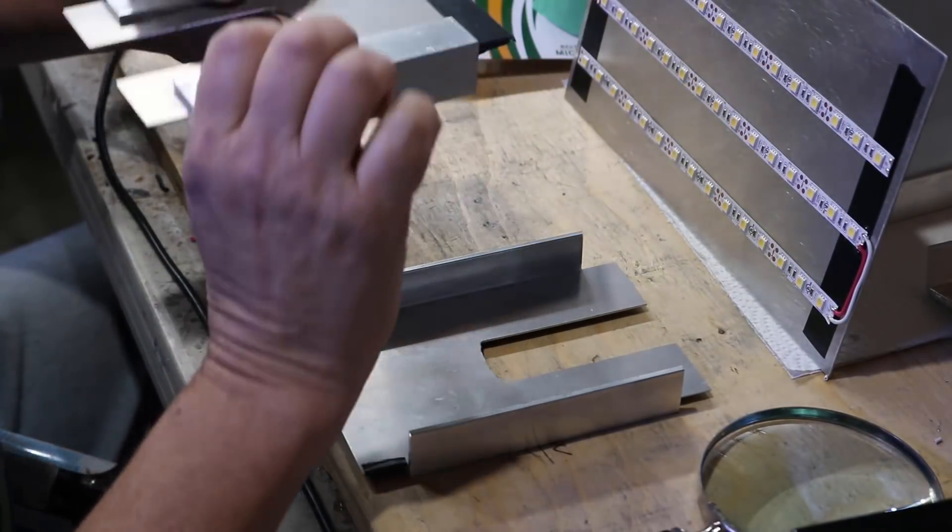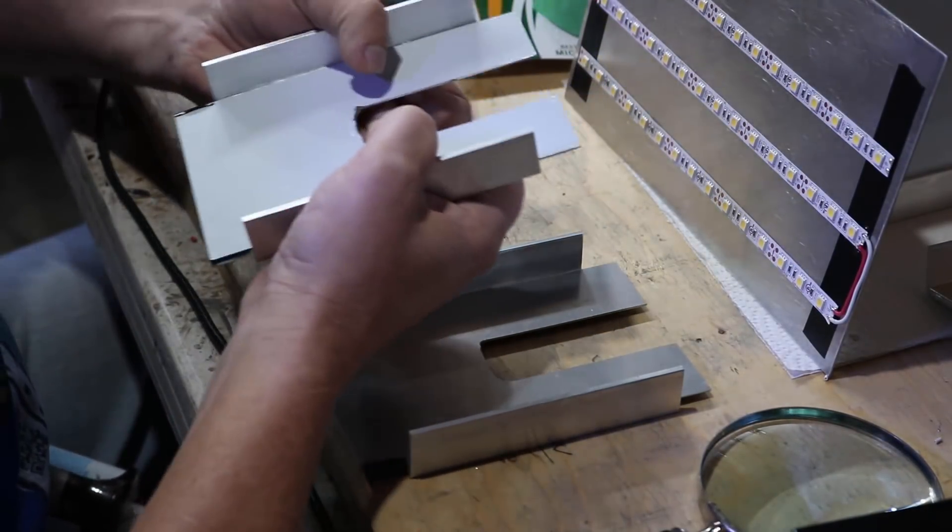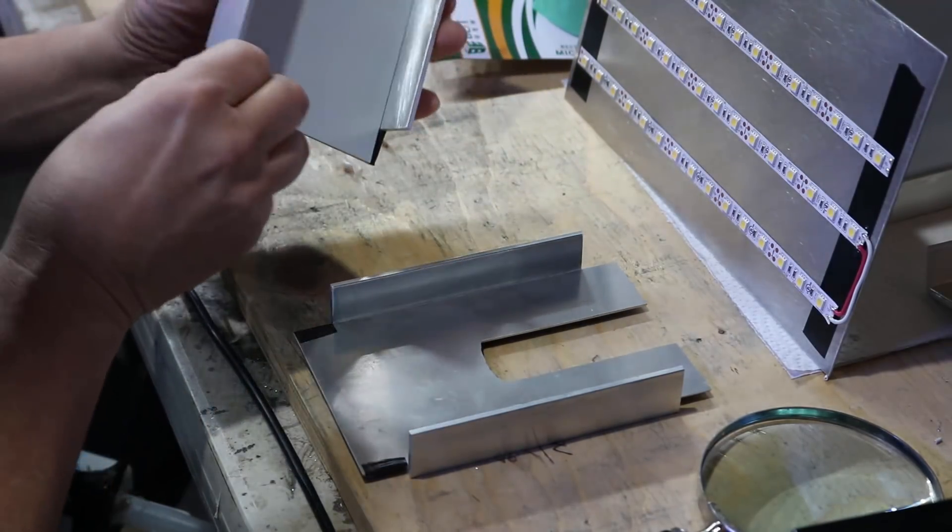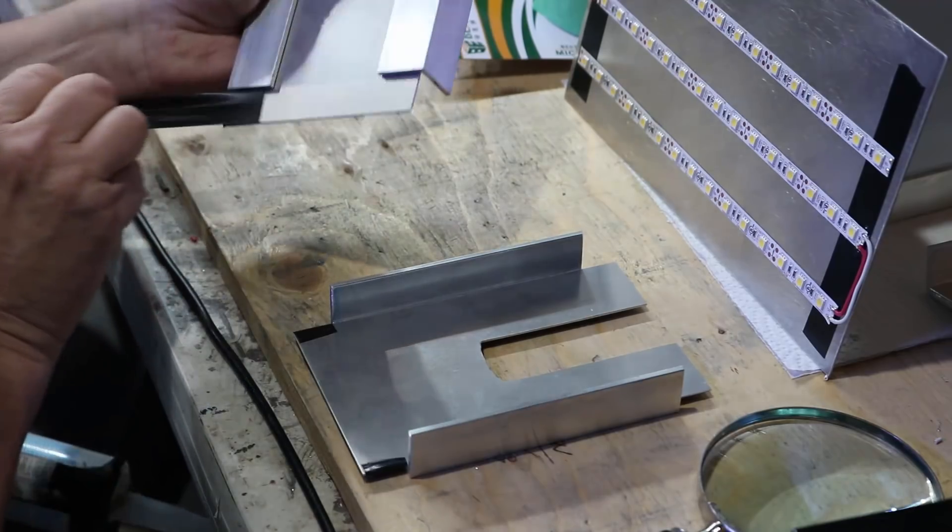These are the two end caps. I've already routed out where the two pipes are going to fit down through so I can lift it in and out. As you can see with the silicone, it's more than strong enough. I can't pull it apart.